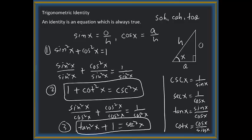In summary, the first identity comes from the SOH-CAH-TOA definition and the Pythagorean theorem. Dividing by sine² x gives the second identity, and dividing by cosine² x gives the third. The three identities to remember are: sine² x + cosine² x = 1, 1 + cotangent² x = cosecant² x, and tangent² x + 1 = secant² x. In the next video, we will talk about the application of all three identities.